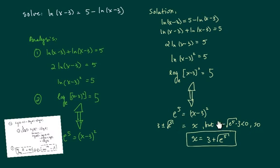one of the roots is not sufficient or is not available. So x is equal to 3 plus square root of e to the 5. That's the final answer.